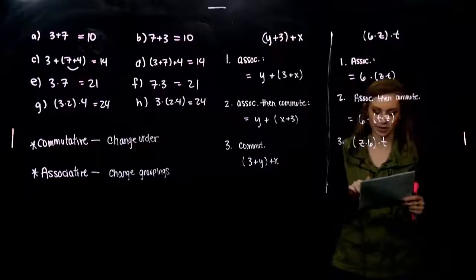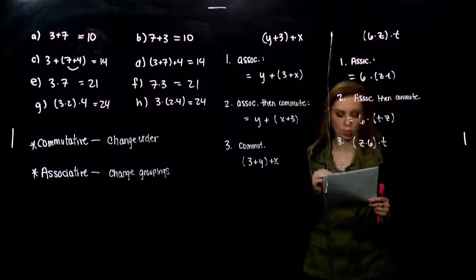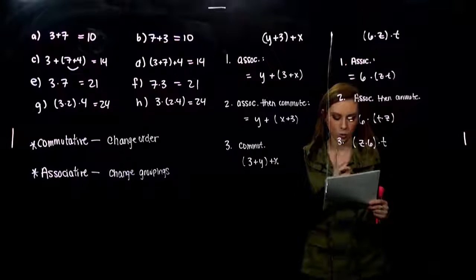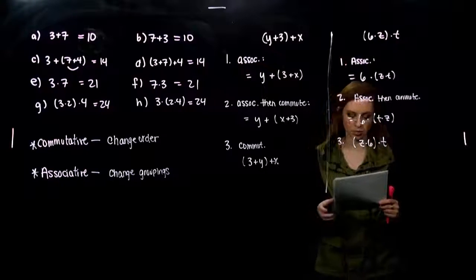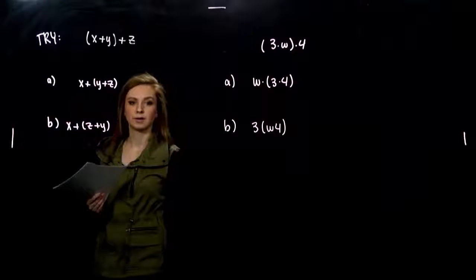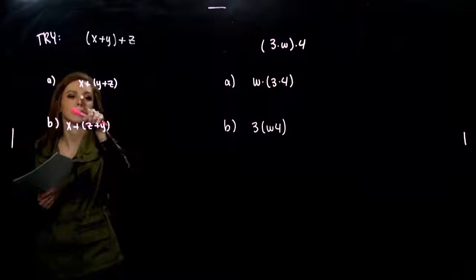So, try starting with quantity x plus y plus z. What laws, in what order, the order does matter, were used to get you to A and B? Break those down. Tell me what kind of laws you're talking about. Alright, so for the first half, to go from here to here, what had to happen? What law did we use?